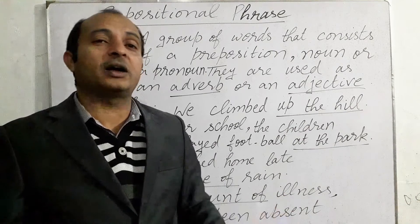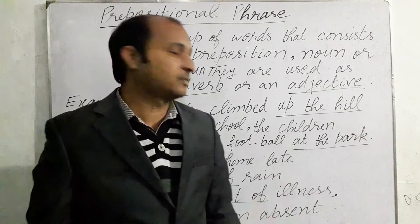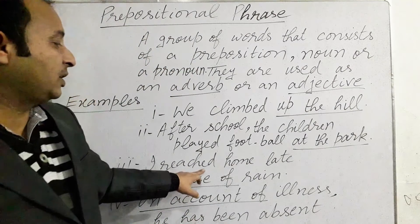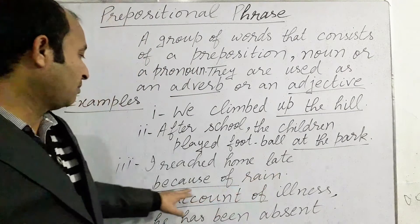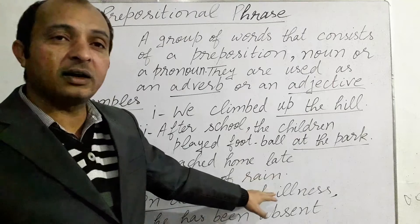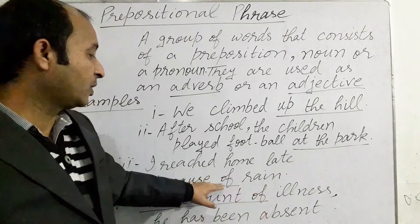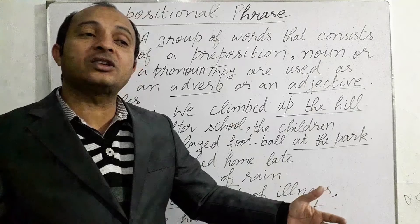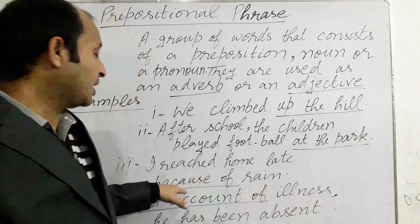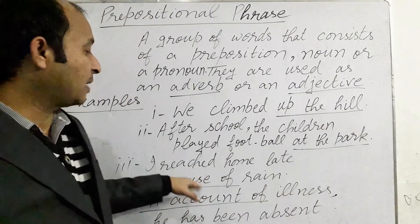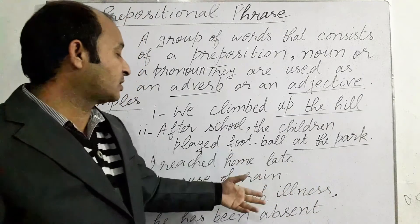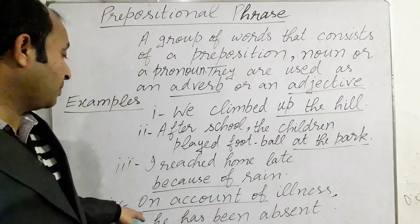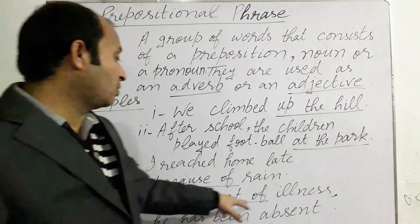Another example: 'I reached home late because of rain.' Here 'because of' is a prepositional phrase — it consists of a preposition and another word. So 'because of rain' is the prepositional phrase in this sentence.